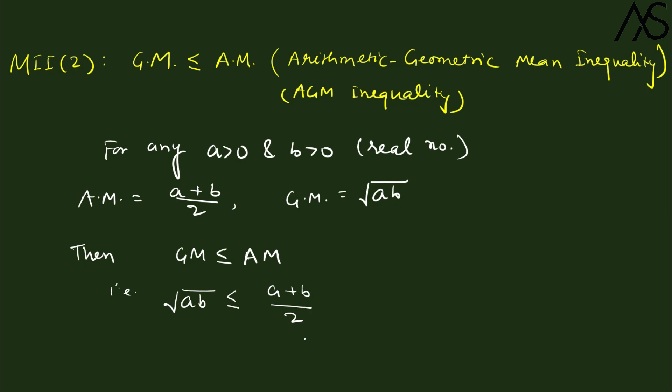For the proof, we use the order property of real numbers as well as the algebraic properties of real numbers. To show less than or equal to, we first handle the strictly less than case, then the equal to case, and combine them to get less than or equal to.